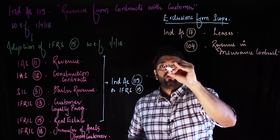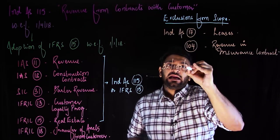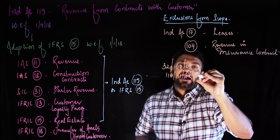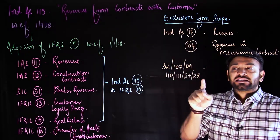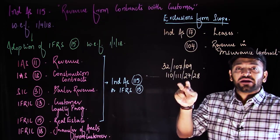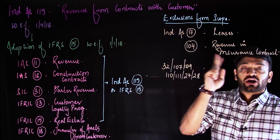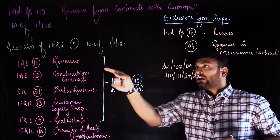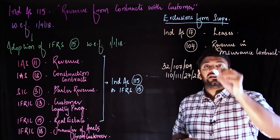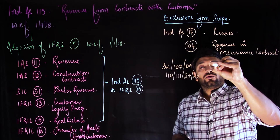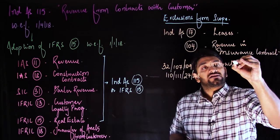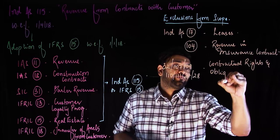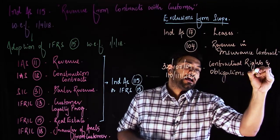Ind AS 32, 107, and 109 relate to financial instruments — the dividend and interest income arising from these contracts are not covered under IFRS 15 but are specifically covered under these standards. Ind AS 110, 111, 27, and 28 deal with group companies, subsidiaries, joint arrangements, and associates. These are all excluded from the scope of Ind AS 115.